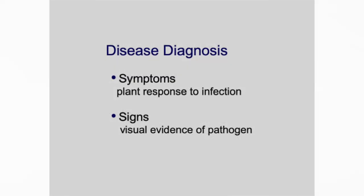We recognize diseases based on symptoms and signs. A symptom is the wilt; a sign is the fungus or the bacteria. Sometimes we need a microscope to see those signs. When I go out and visit an operation or if I've got research plots and I don't know what's causing it, I look for signs. Usually a lot of these things are microscopic, but sometimes you can use your eyes or a little hand lens to see them.